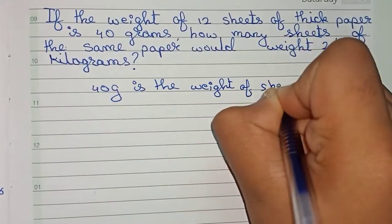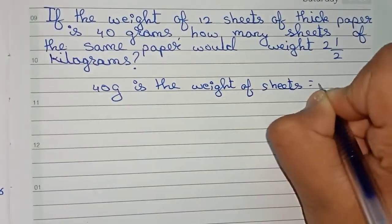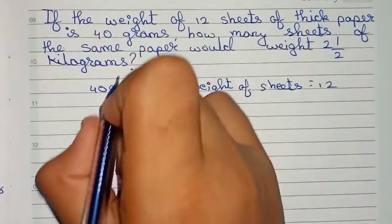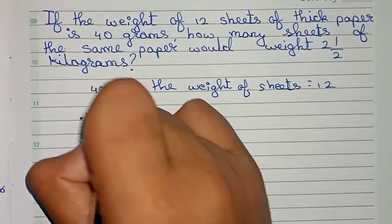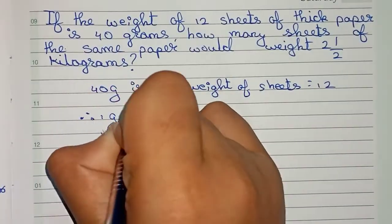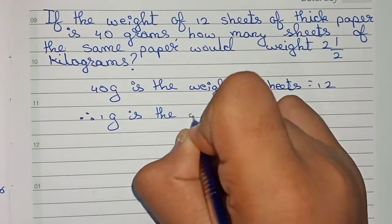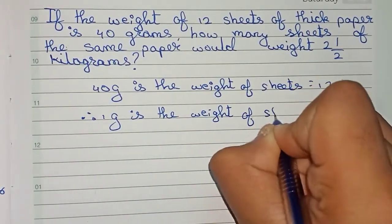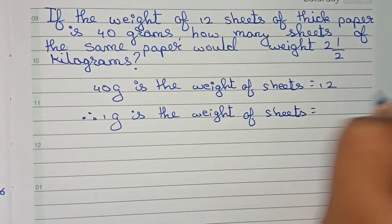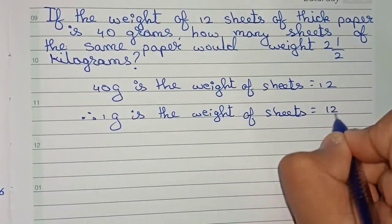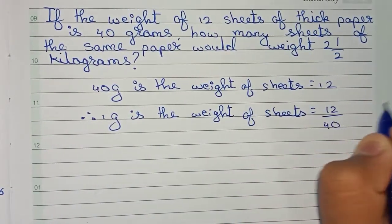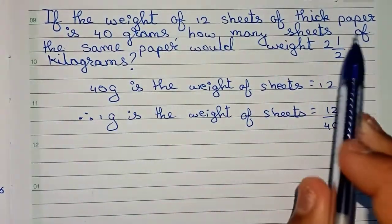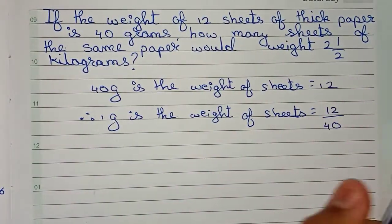...12 sheets, as 40 grams is the weight of 12 sheets. So now I write: 1 gram is the weight of how many sheets — definitely a lesser number of sheets — so 40 will go for division, that will be 12 by 40. Now, as given in the question, 2 and 1/2 kg...